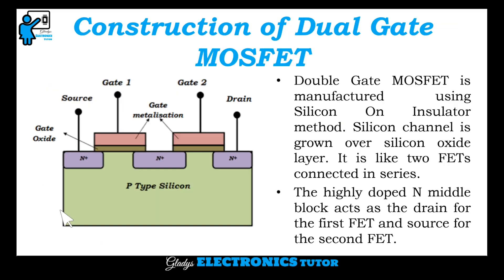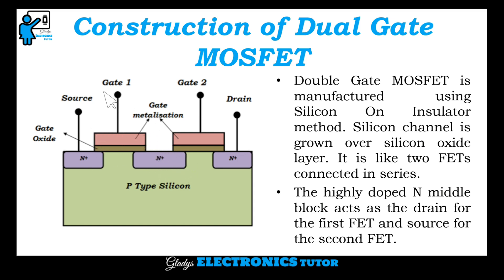This is the construction of dual gate MOSFET. The double gate MOSFET is manufactured using the silicon-on-insulator (SOI) method. A silicon channel is grown over a silicon dioxide layer. It looks like two FETs connected in series, so the highly doped N middle block acts as the drain for the first FET and the source for the second FET.